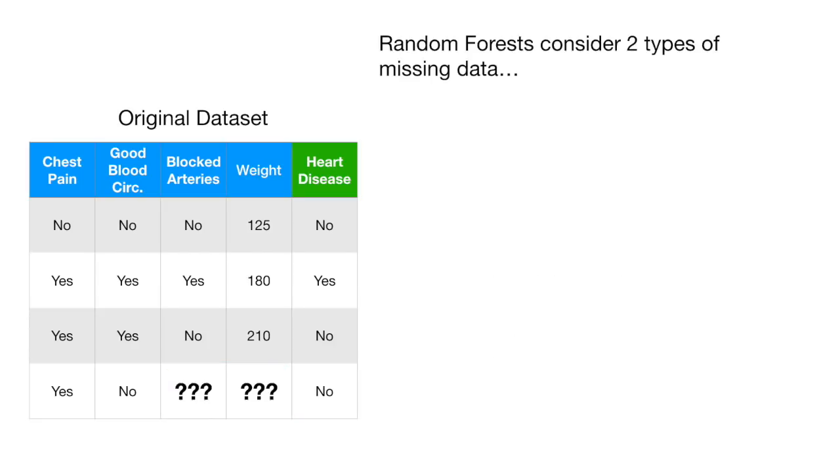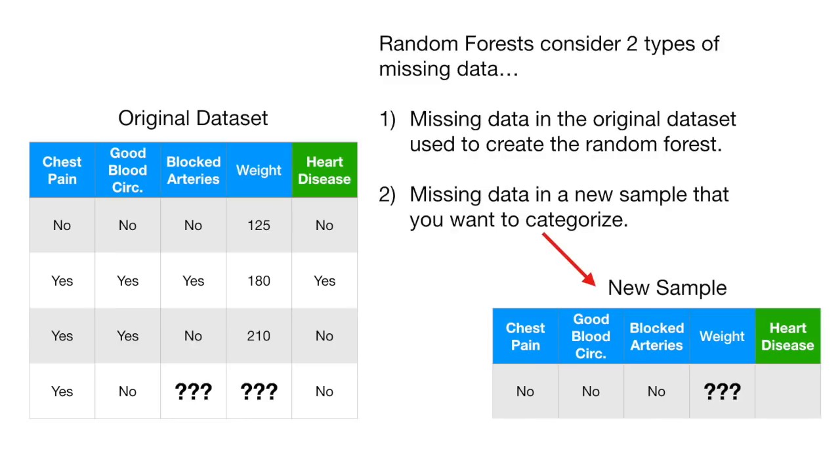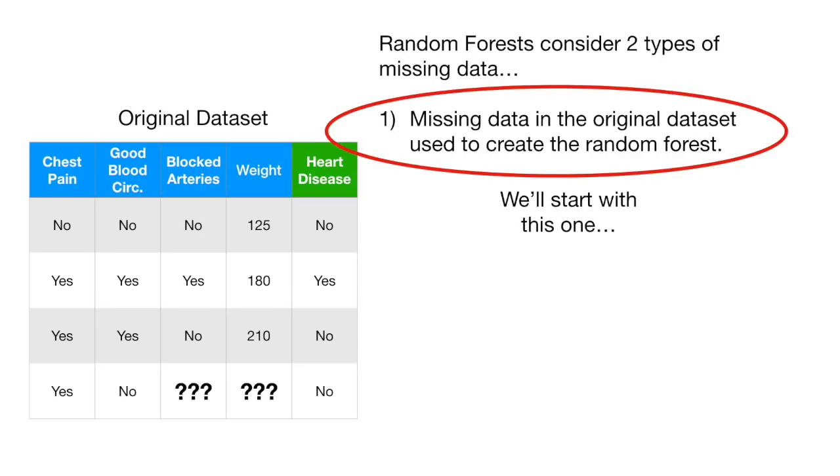Random Forests consider two types of missing data. One, missing data in the original data set used to create the random forest. And two, missing data in a new sample that we want to categorize. We'll start with this one.